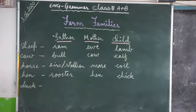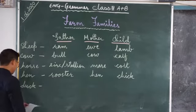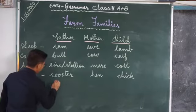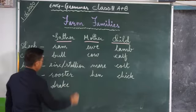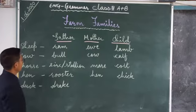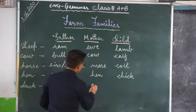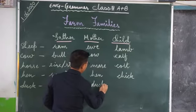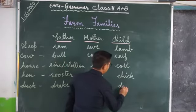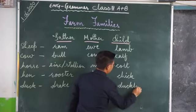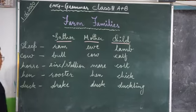Next is duck. The father of the duck family is called drake. And the mother is called duck. And the child is called duckling.